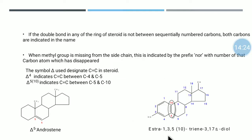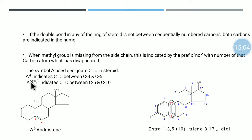Looking at the structure of estra-1,3,5(10)-3,17-beta-diol, you observe that the double bond between 5 and 10 is not in sequence. To designate this double bond using delta, we write delta-5 in bracket 10. Delta indicates double bond, and where it is present — between carbon number 5 and carbon number 10. This is the way we represent the position of a non-sequential double bond in the steroid molecule.